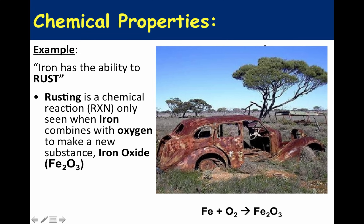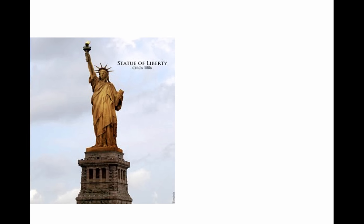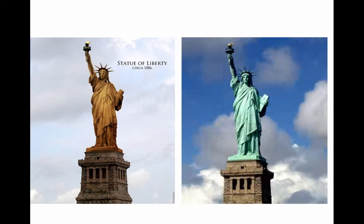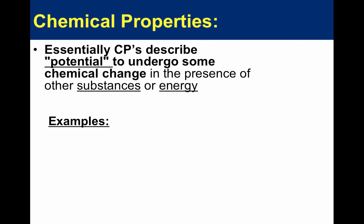Sometimes the changes are much harder to see. Take the Statue of Liberty — I bet you've never seen it like this, but this is how it looked in about 1886 when it first came over. The Statue of Liberty is made of copper. One of the chemical properties of copper is that it reacts readily with oxygen to make that green coating — which is really copper oxide — that we see on the statue today.